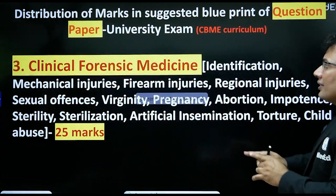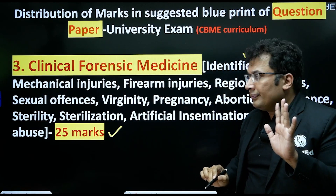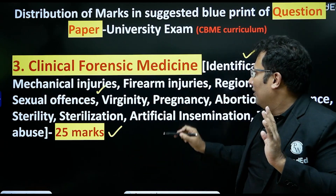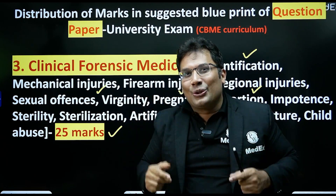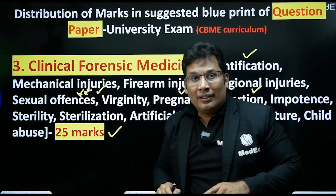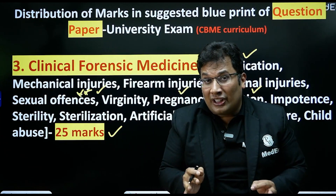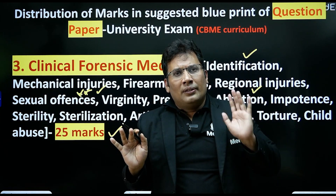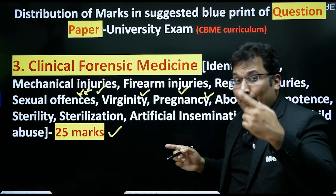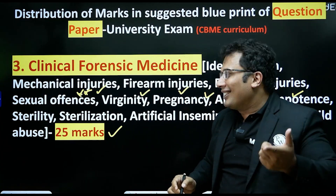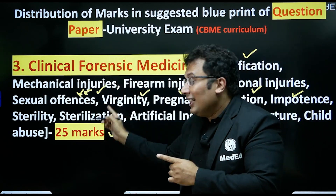Clinical forensic medicine is around 25 marks. Important topics include identification, examination, mechanical injuries — blunt force trauma, sharp force trauma, firearm injuries, entry wound, exit wound — regional injuries such as skull fractures and transportation injuries. Very important is sexual offenses: definition of rape, punishment, victim examination, accused examination, sexual perversion, unnatural sexual offenses. Also virginity, pregnancy, abortion, MTP Act, impotency, sterility, sterilization, artificial insemination, torture, and child abuse.